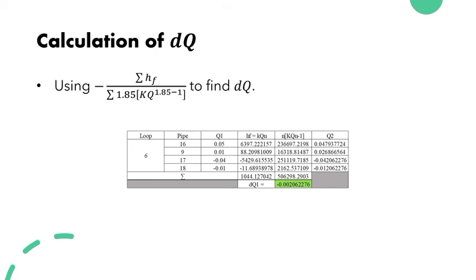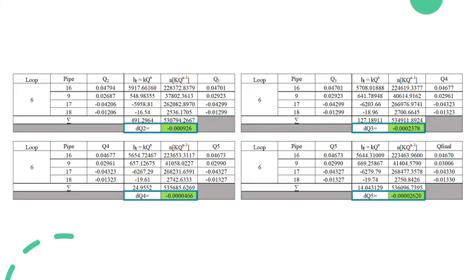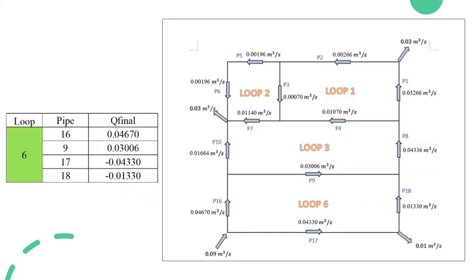Next is the calculation of DQ. The table shows the first trial of calculation. By using this equation, DQ1 is calculated. After we get the DQ1, we can also get Q2. The calculation is repeated until trial 5. The Q final is determined. So this is the final discharge of loop 6.